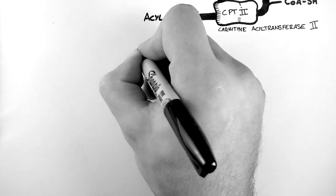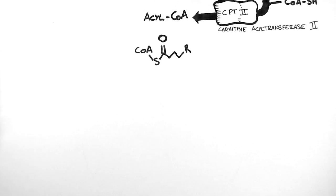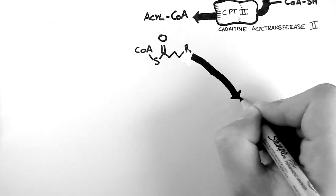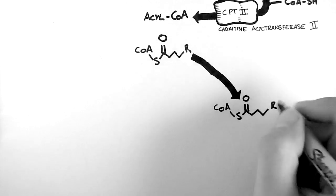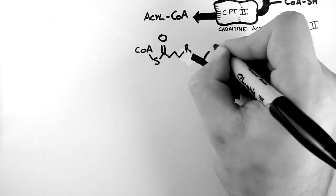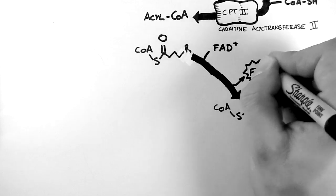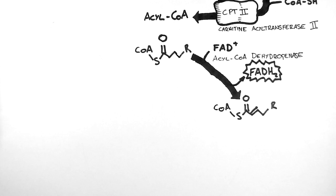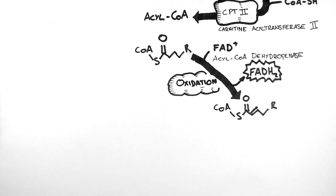Now that the acyl-CoA is located within the mitochondria, beta-oxidation proper can occur. This process has four phases. In the first, the acyl-CoA is dehydrogenated to form a trans-delta-2-enoyl-CoA. In this process, FAD+ is reduced and becomes the high energy molecule FADH2. This FADH2 molecule can be used in the electron transport chain, which we'll discuss in the next tutorial. The enzyme that oversees this reaction is acyl-CoA dehydrogenase. This is an oxidation reaction because FADH2 is an oxidising agent — it oxidises the acyl-CoA molecule, and a new double bond is formed between the second and third carbon in the molecule.